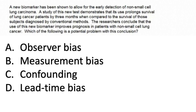A new biomarker has been shown to allow for early detection of non-small cell lung cancer. A study demonstrates that its use prolongs survival of lung cancer patients by three months compared to those diagnosed by conventional methods. This is showing you that a particular screening test — a biomarker — makes it look like it's prolonging survival. The researchers concluded that this new biomarker improves prognosis in patients with non-small cell lung cancer. Which of the following is a potential problem with this conclusion?